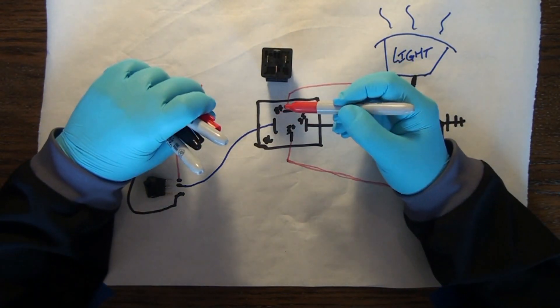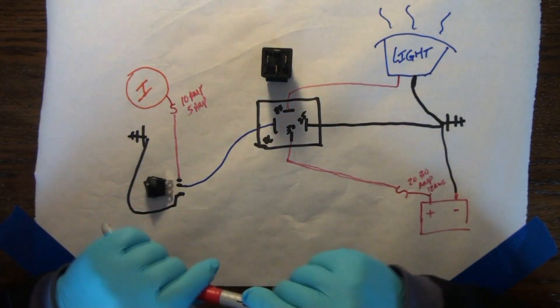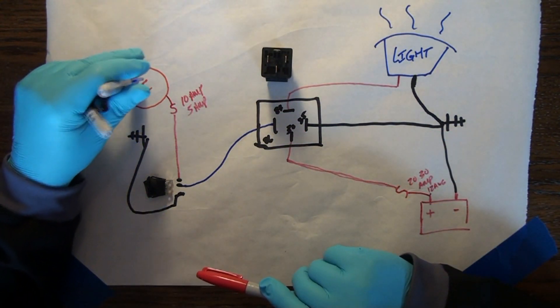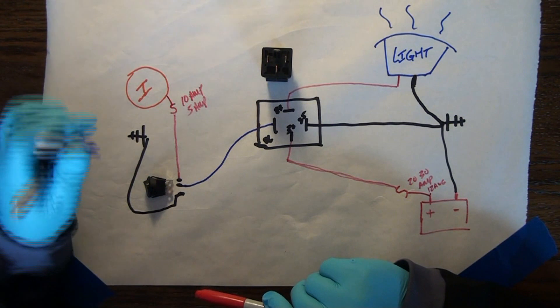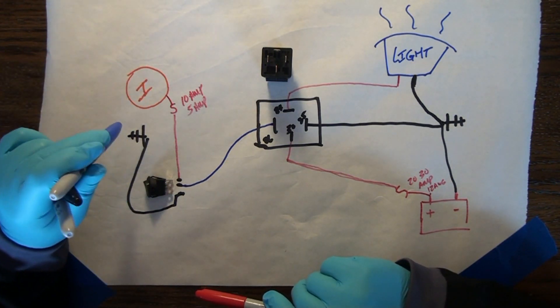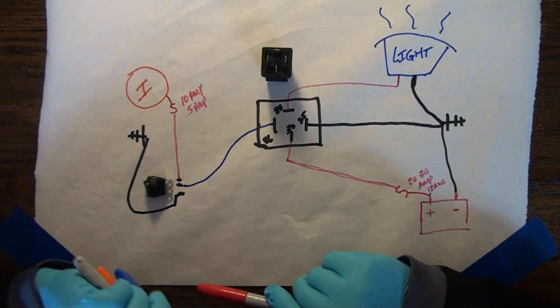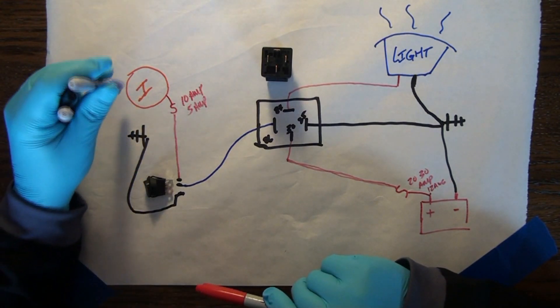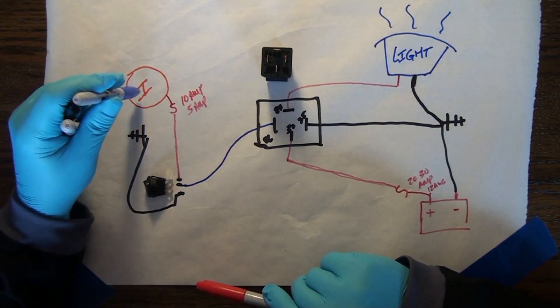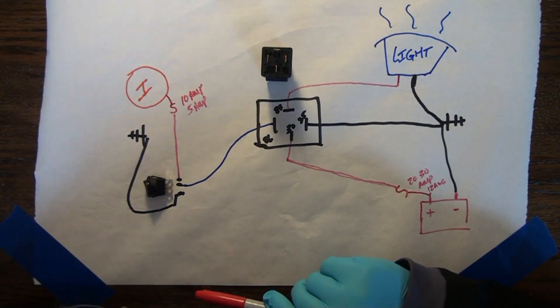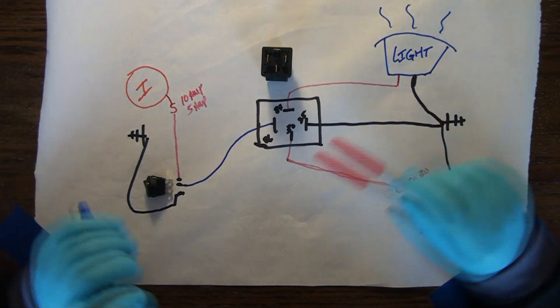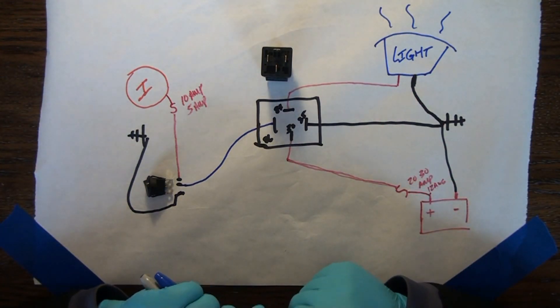If you use one relay per accessory, you will always have your system protected and won't overload your ignition switch. I get folks who tell me they tied three or four accessories into their ignition switch and burned it out because the ignition switch is never meant to hold a ton of amperage—it's meant to hold low amperage. That's your diagram. That's how it works.